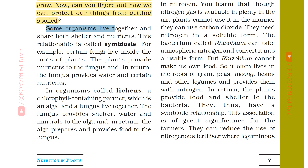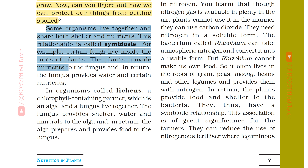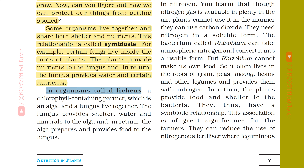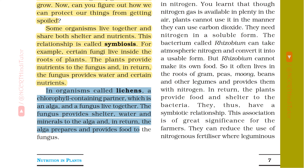Some organisms live together and share both shelter and nutrients. This relationship is called symbiosis. For example, certain fungi live inside the roots of plants. The plants provide nutrients to the fungus and in return, the fungus provides water and certain nutrients. In organisms called lichens, a chlorophyll-containing partner, which is an alga, and a fungus live together. The fungus provides shelter, water and minerals to the alga, and in return, the alga prepares and provides food to the fungus.